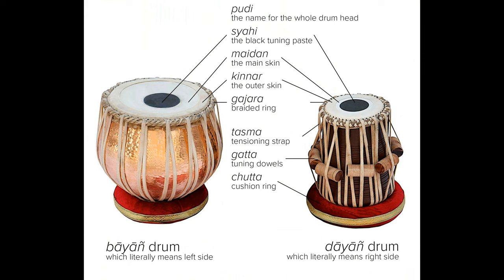List the different parts of a tabla along with definition of each. The tabla is a traditional Indian percussion instrument consisting of two drums: the daya, the right drum, and the baya, the left drum.